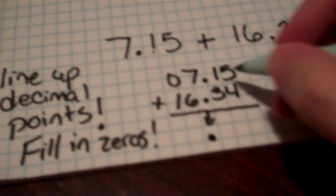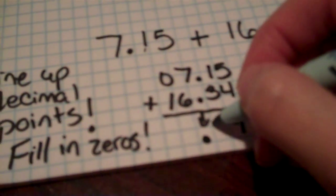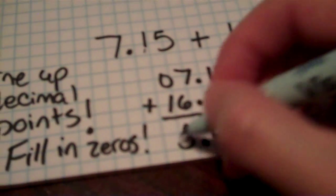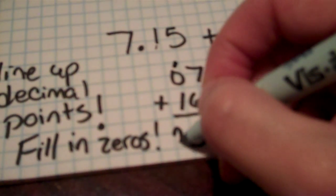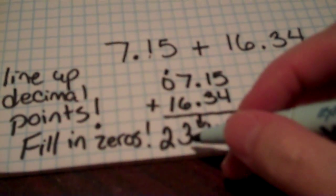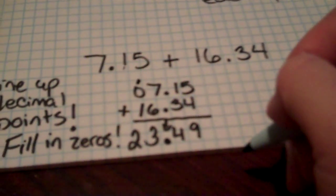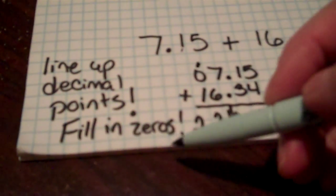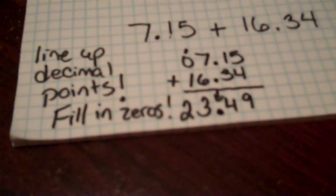And now I'm ready to add. So I've got 5 plus 4 is 9. 1 plus 3 is 4. 7 plus 3 gives me 13. Carry our 1. 1 plus 1 is 2. So our answer would be 23 and 49 hundredths. So we remember we need to line up the decimal points. We need to fill in with zeros and make sure that everything lines up. And then you just add.